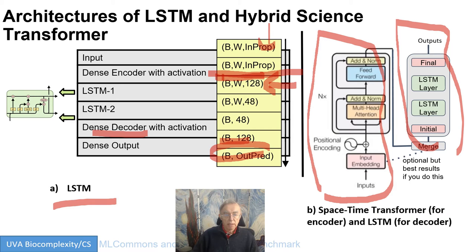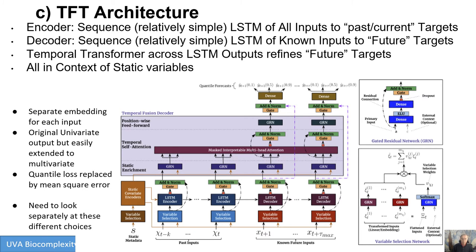For the LSTM itself, we have both an encoder and decoder which is basically the LSTM axis. The TFT picture is very complicated, coming from the TFT paper — it took a long time to understand. The encoder is an LSTM using all the inputs, including the observed ones, going to past and current targets. The decoder only has known inputs, not the observed ones that have to be measured, and that goes to future targets. Your decoder feeding in the known inputs is a clever idea in the TFT not used in the other models.